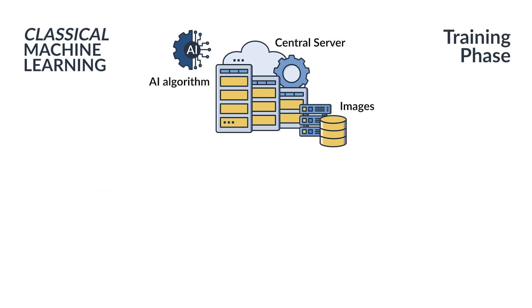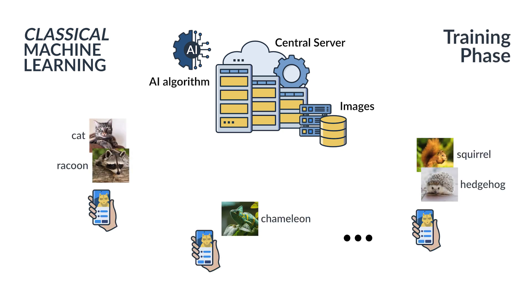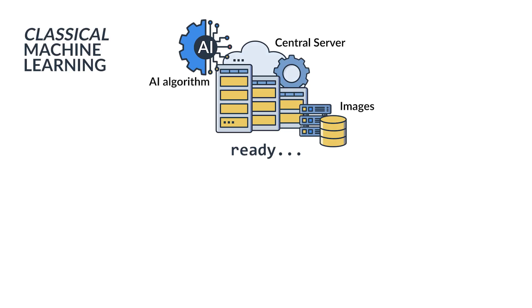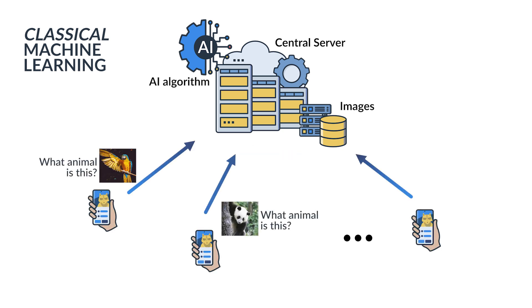With this aim, it receives pictures from mobile phones sent by multiple users around the world. Each image also has a tag or label with the kind of animal — for instance, a picture of a cat and the word 'cat'. These pictures are gathered and stored in our central element to train the algorithm. Once the algorithm has been trained and the training phase is finished, the central element is ready to receive requests — ready for the production phase. When it receives a new image without the label, it is able to identify the kind of animal it is.